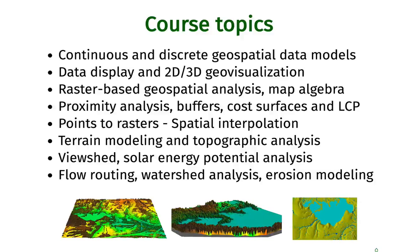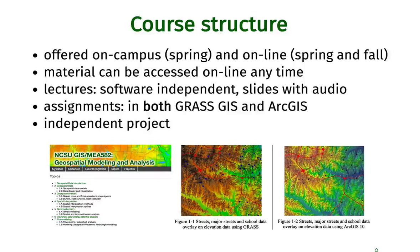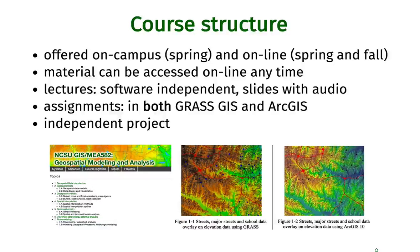We will also discuss and learn about flow routing, watershed analysis, and erosion modeling as an example of how to model landscape processes within GIS. The course is offered on campus during the spring semester and is available online both during spring and fall semesters. All course material is kept online and accessible at any time.